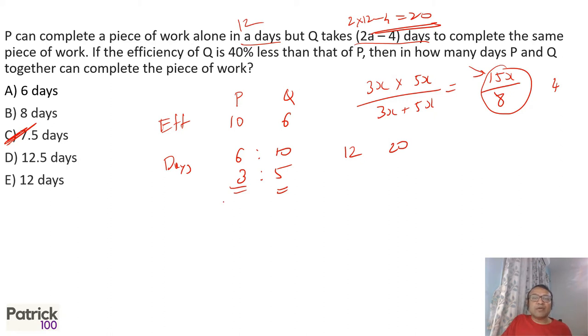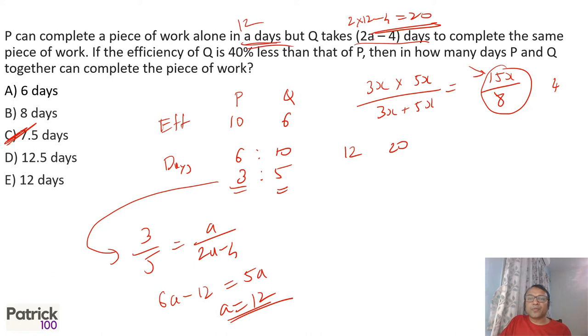Another way of doing this: ratio of days is 3 is to 5. So 3 upon 5 is equal to A upon 2A minus 4. Cross multiply, 6A minus 12 is equal to 5A. From that also you get A equal to 12. Once you get A equal to 12, you can substitute. So A is 12, 20 days. Together it will take 12 into 20 upon 12 plus 20. That also will give you 7.5.